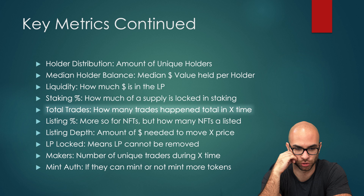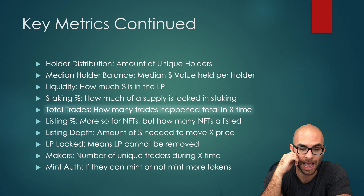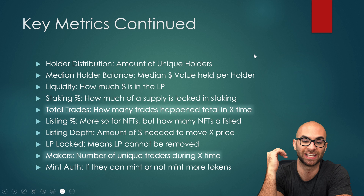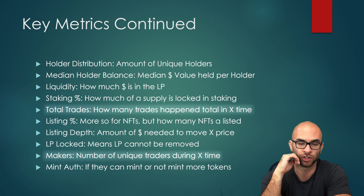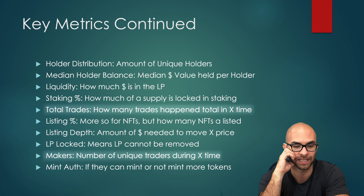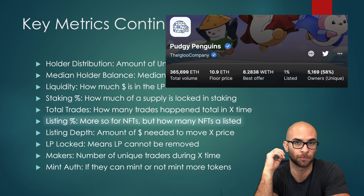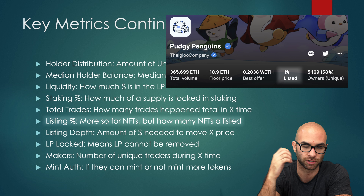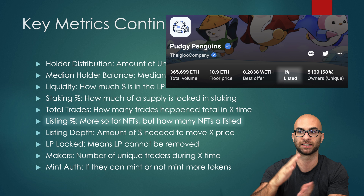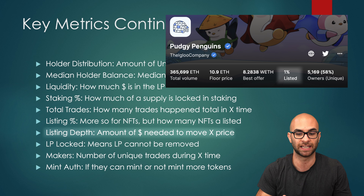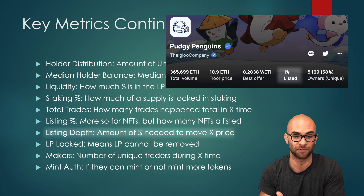I also like to look at total trades — this is how many unique trades are happening within a specific token. And to combine that with makers, makers show the amount of unique traders during that same period. So you might have had 1,000 trades, but it might have only been 200 makers or 200 different people making those trades. I actually think makers are a better thing to look at. You also have listing percentage, which is more so important for NFTs — how many NFTs or a certain token are listed shows the buy wall or how much buying pressure is needed in order for a token to get to a certain price.